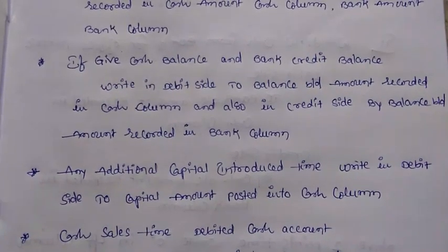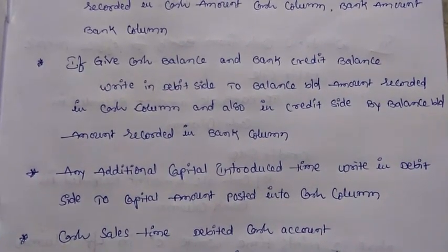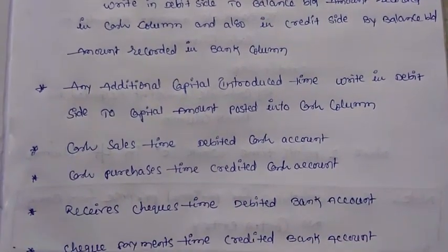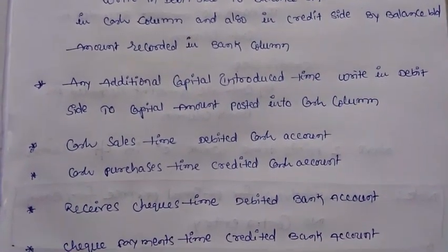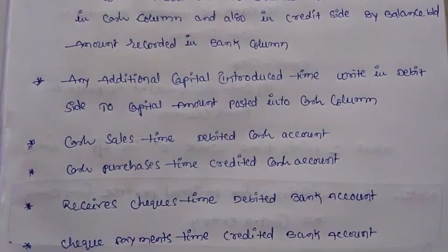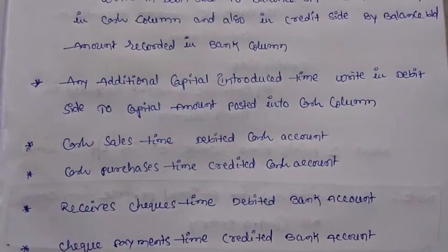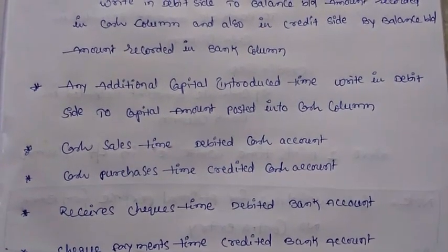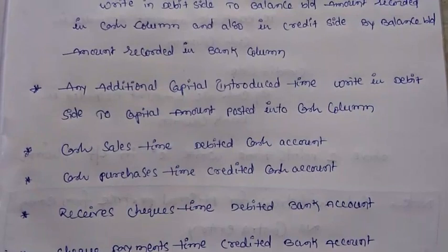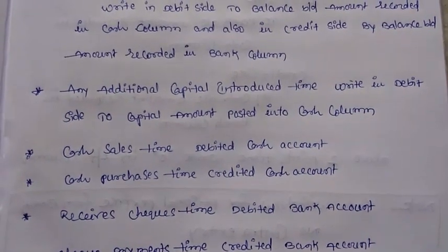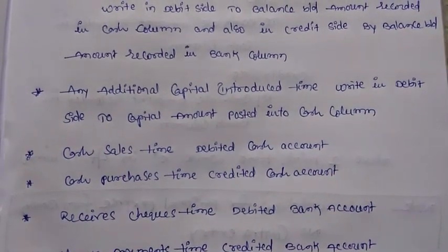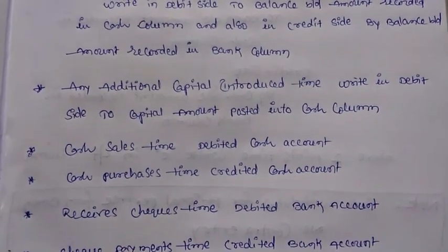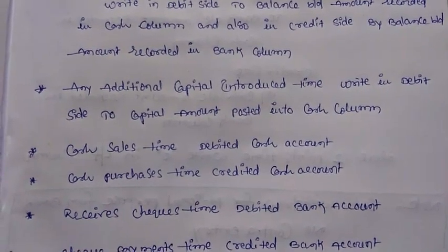The cash column amount is recorded on the debit side, and on the credit side 'By Balance Brought Down' — the bank credit balance is recorded on the credit side. Next, in case of any additional capital introduced, we write on the debit side 'To Capital Account', with the capital account amount posted into the cash column.